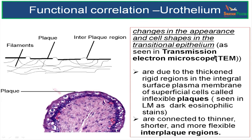The reason for this can be studied using a transmission electron microscope (TEM). The superficial cells exhibit thick and rigid regions in the integral surface of the plasma membrane called plaques. Under the light microscope, they look like dark eosinophilic chains. These dark eosinophilic chains are nothing but the plaques — thickened regions in the surface plasma membrane of the superficial cells.